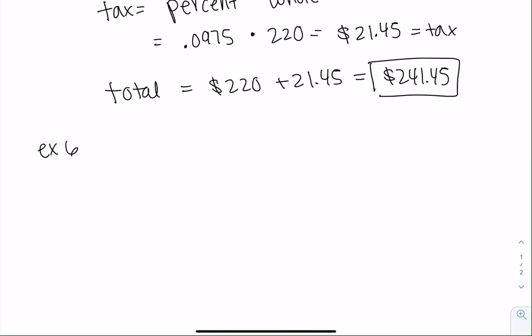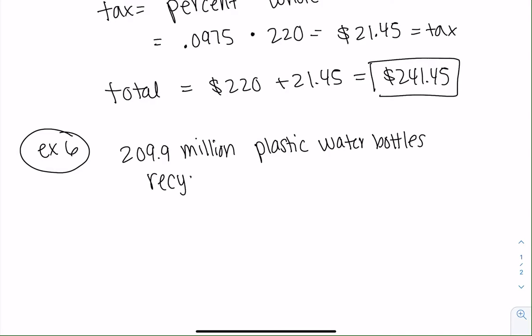So example 6. Now we're going to look at Australia. We have 209.9 million liters of plastic water bottles are recycled out of 582.9 million produced. That would be the whole, because that's all of them. And then what percent?